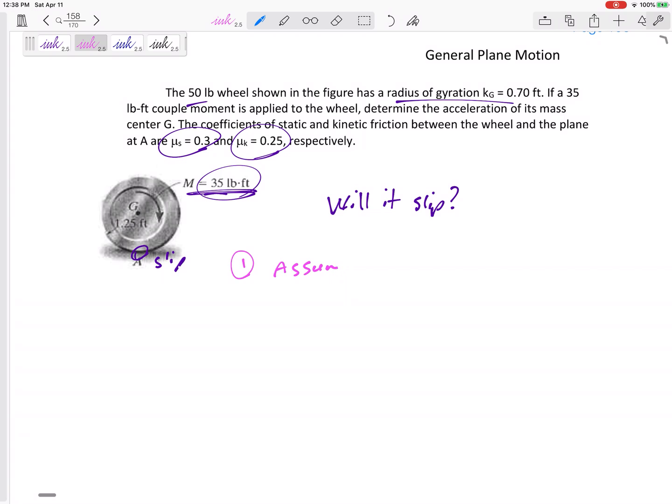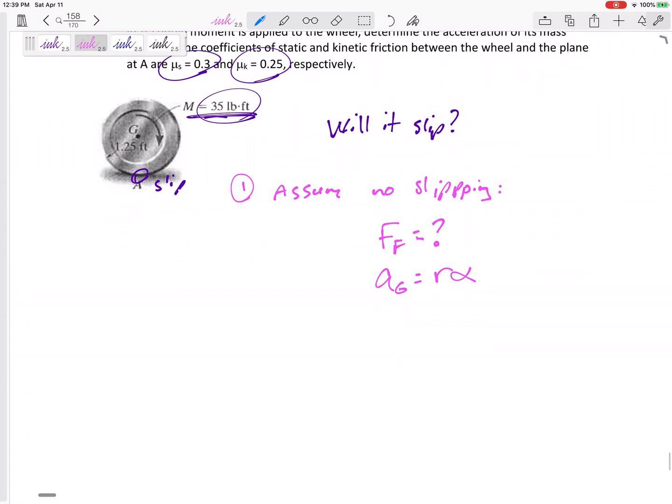So this is the angular equivalent of those will it slip type problems. And so I do it the same way I used to. First, I would assume no slipping. That would mean that I don't know the force of friction. But that would mean the acceleration of point G is equal to R alpha. And then what would I do? I would solve for force of friction. See if this is possible.